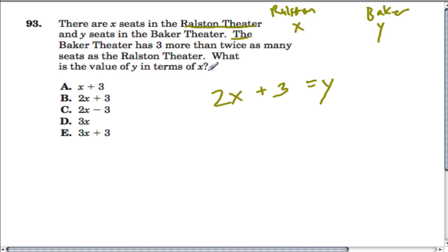So we want to know, what is the value of Y in terms of X? So how do you describe what Baker has in terms of what Ralston has? And I think that we have that set up right here in this situation, this equation. This says 3 more than twice the number of seats.